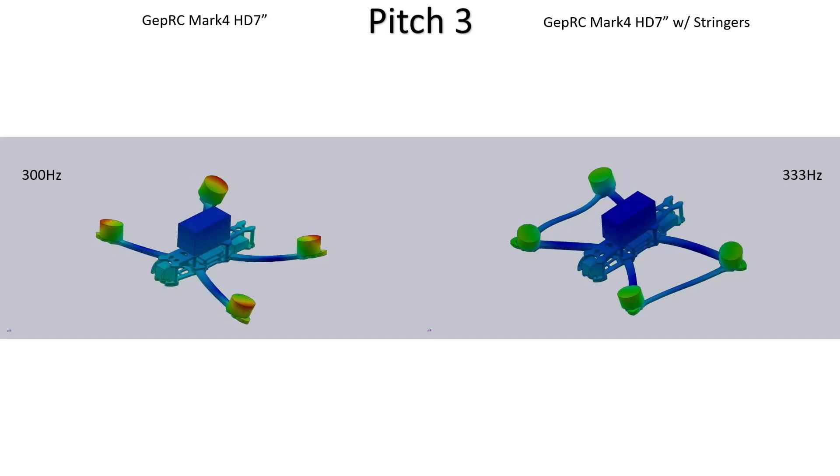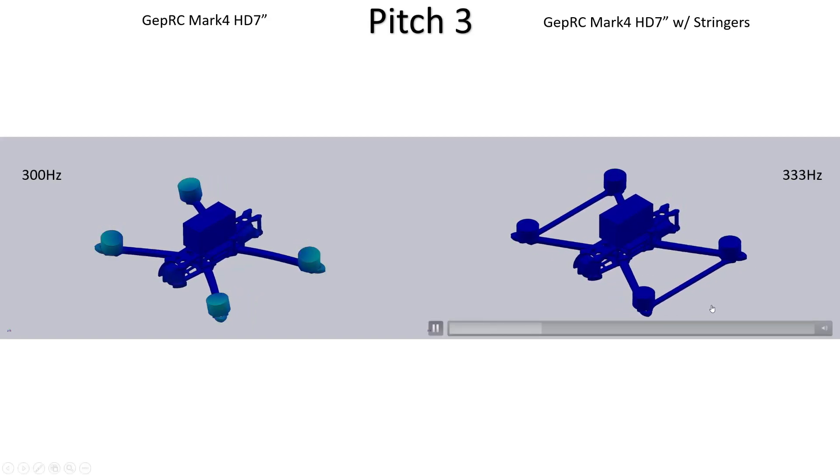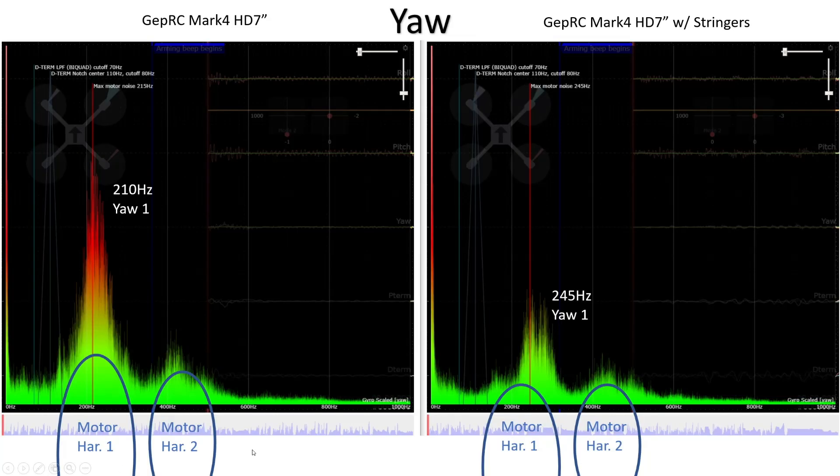Finally let's look at the spectrograph for the yaw axis and we can see here a pretty similar story actually to what we saw with that top mode on pitch. We started with a fairly nasty yaw mode at 210 hertz, you can see quite a large spike, and we can see that adding the stringers in has shifted that up to 245 hertz and also brought it down a lot in its power level, in the amplitude of those vibrations.